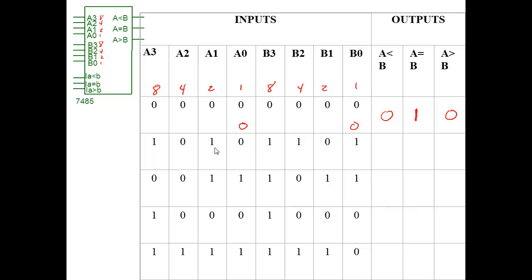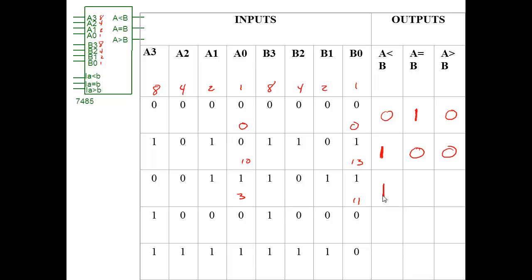B is bigger — the mouth eats the biggest one — so it would be A is less than B. Put a one in that box and a zero in the other two. For the next one, A is two plus one, which is three, and B is eight plus two plus one, which is 11. Again, B is greater than A, so A is less than B: one there, and two zeros there.